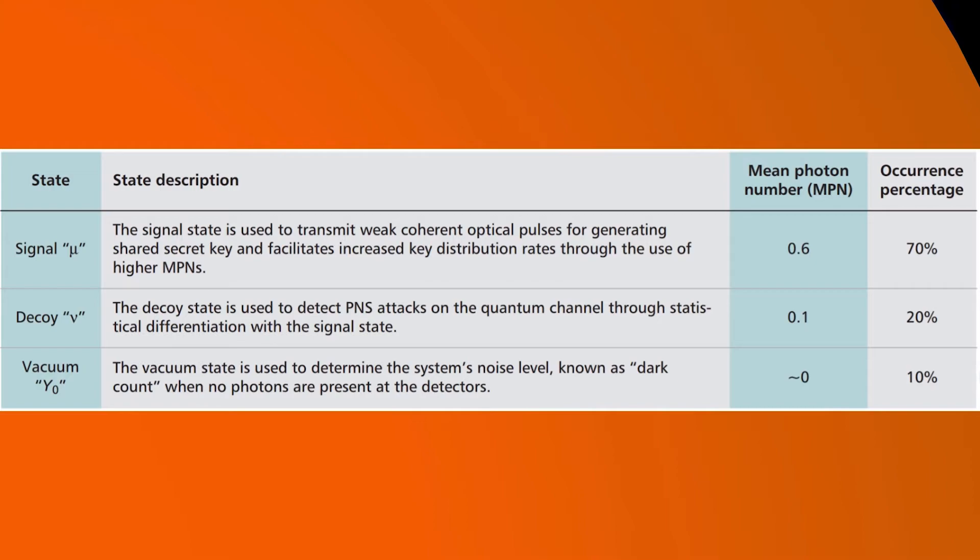Each state has its occurrence percentage and unique mean photon number per pulse, the MPN. For example, the signal state is transmitted 70% of the time with an MPN of 0.6, the decoy state is transmitted 20% of the time with an MPN of 0.1.